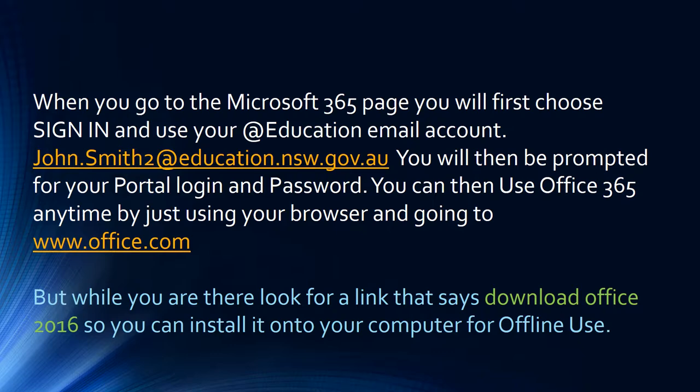When you go to the Microsoft 365 page, you will first choose Sign In and use your at Education email account. You will then be prompted for your portal login and password. You can then use Office 365 any time by just using your browser and going to www.office.com. But while you are there, look for a link that says Download Office 2016, so you can install it onto your computer for offline use.